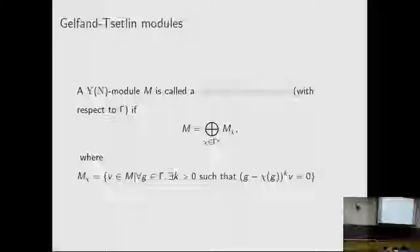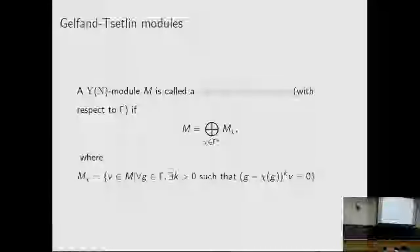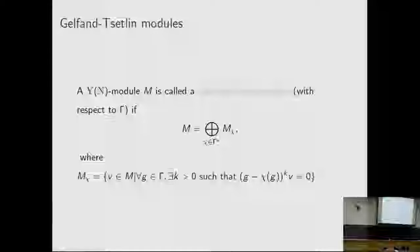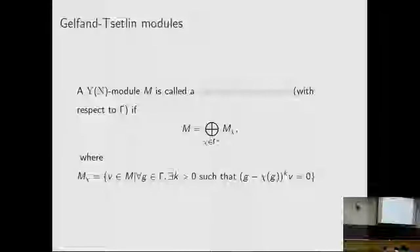This Gelfand-Zeitlin sub-algebra of the Yangian is maximal commutative. With this Gelfand-Zeitlin sub-algebra we can define Gelfand-Zeitlin modules. A Yangian module is called a Gelfand-Zeitlin module if it is a direct sum of generalized Gelfand-Zeitlin eigenspaces.